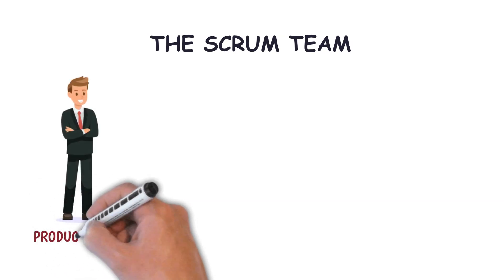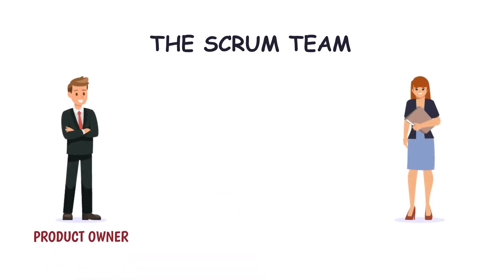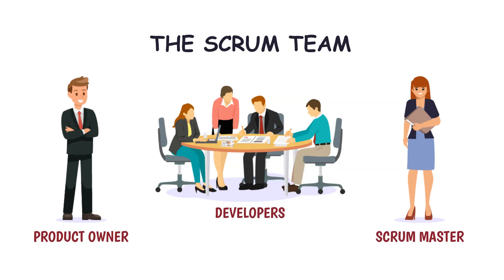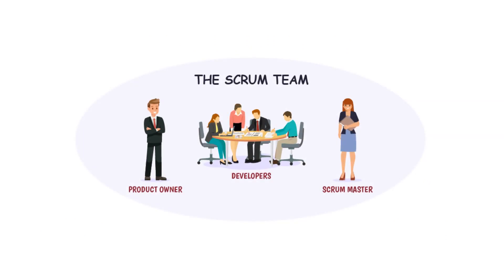A Scrum team is a group of people working together to achieve common goals. The Scrum team consists of a product owner, a Scrum master, and developers, that defines responsibilities they need to respect while performing their tasks. Within a Scrum team, there are no sub-teams or hierarchies. Instead, it is a cohesive unit of professionals focused on one objective at a time, the product goal.